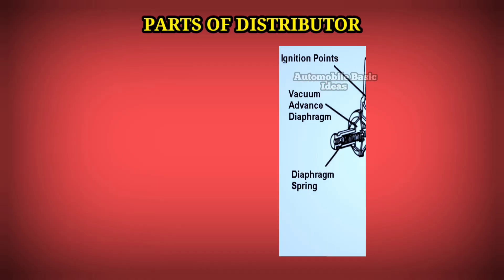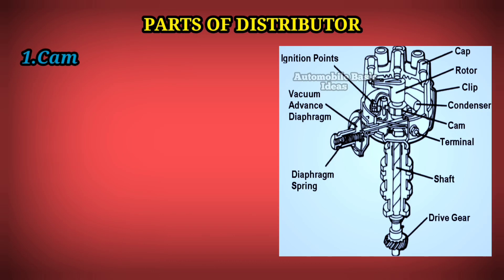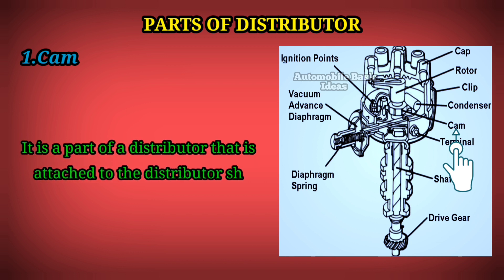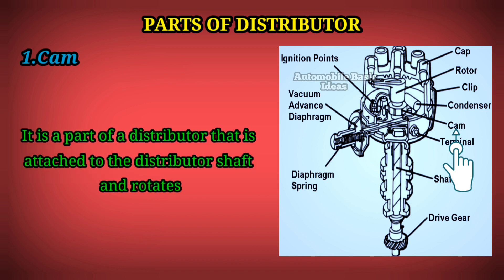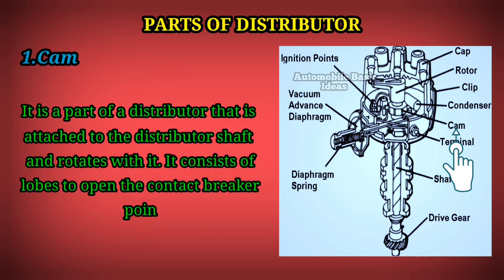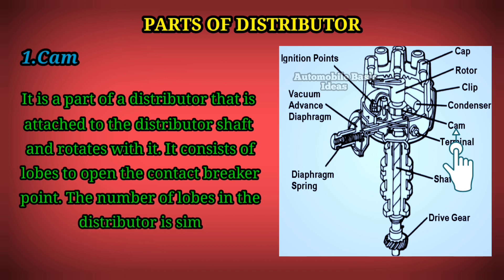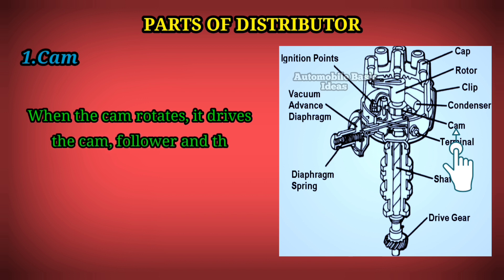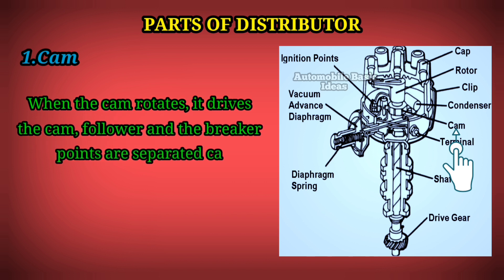1. Cam: It is a part of a distributor that is attached to the distributor shaft and rotates with it. It consists of lobes to open the contact breaker points. The number of lobes in the distributor is similar to the number of cylinders. When the cam rotates, it drives the cam follower and the breaker points are separated, causing the current to break.